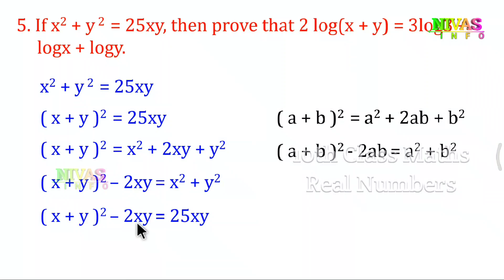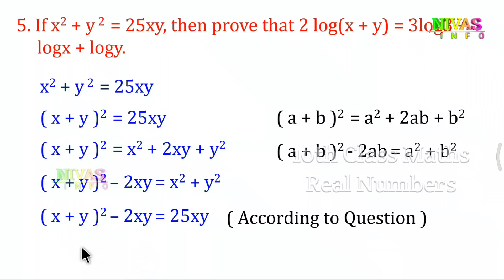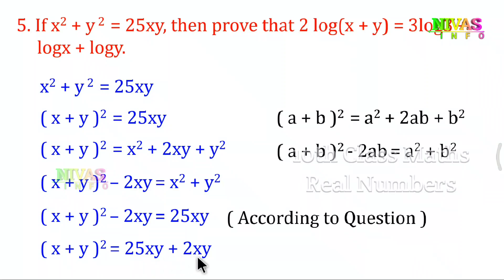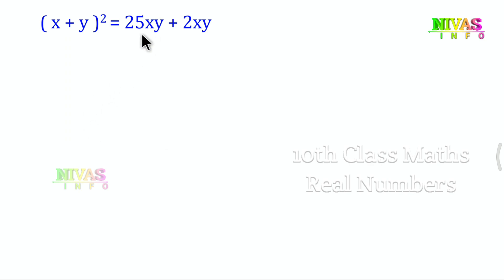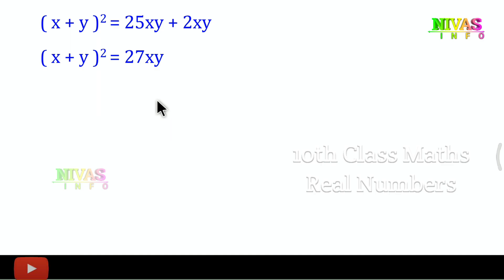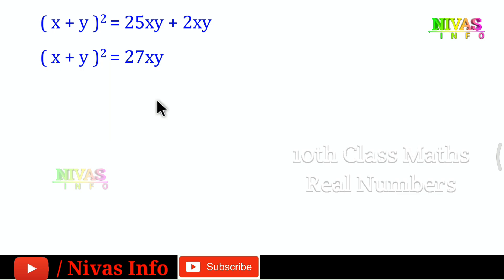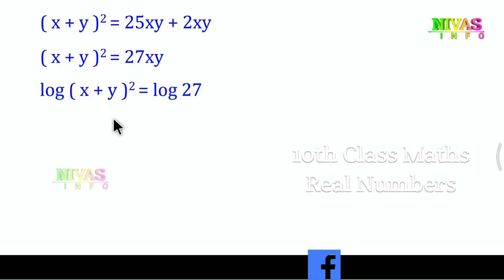Adding 25xy and 2xy gives 27xy. So (x+y)² = 27xy. Now we apply log to both sides because the question requires log.